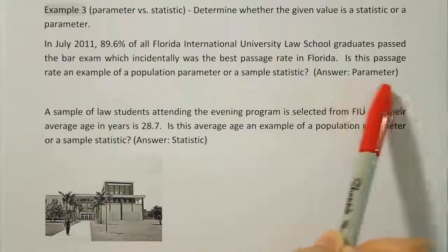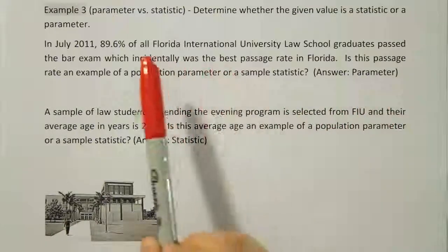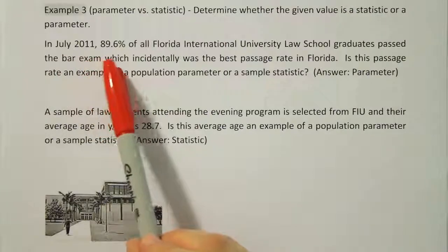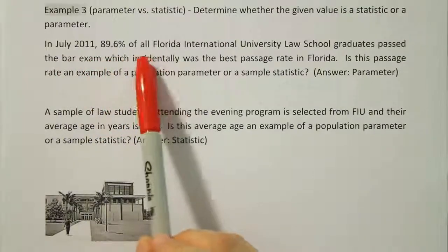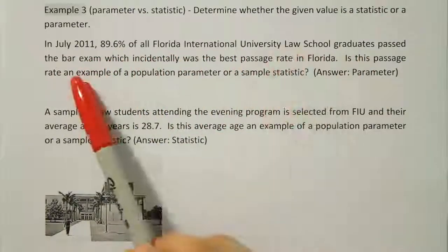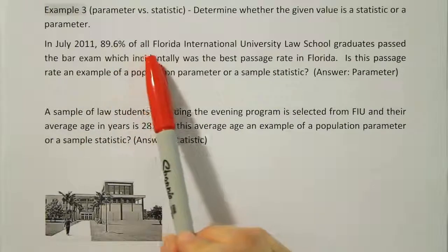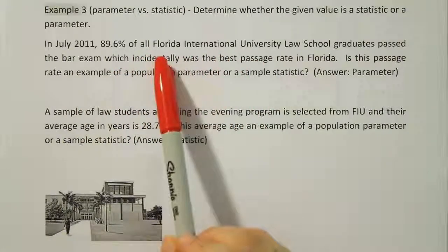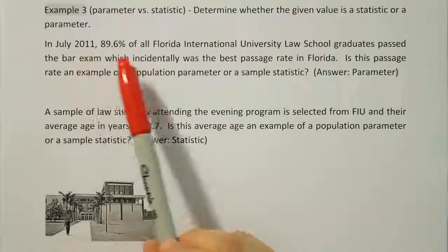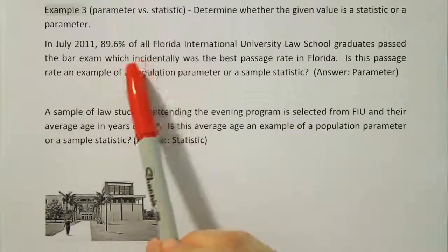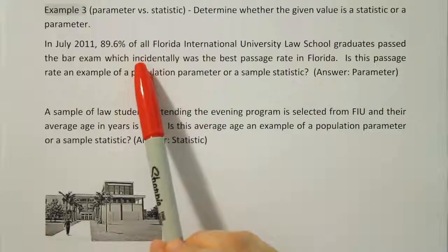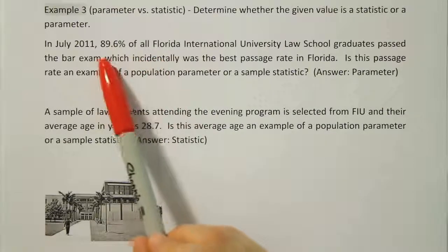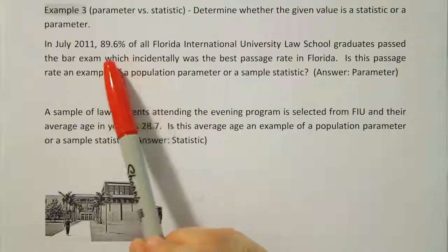The answer is population parameter because when you read the phrase here it says in July 2011, 89.6% of all FIU Law School graduates passed the bar exam. The fact that they looked at every graduate from FIU's law program for that year, 2011, means they sampled the entire population — they took a census of the entire population and calculated this percentage based on all the population data.